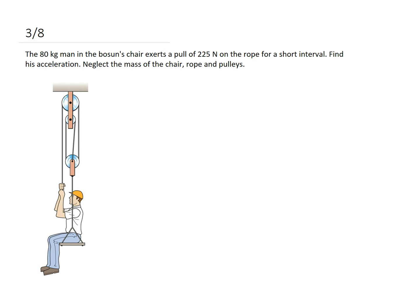This says the 80 kg man in the bosun's chair exerts a pull of 225 N on the rope for a short interval. Find his acceleration and neglect the mass of the chair, rope, and pulleys.